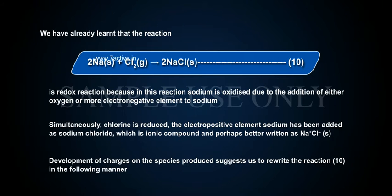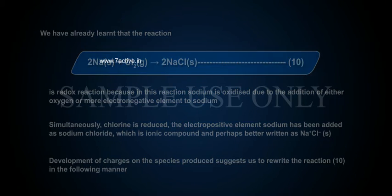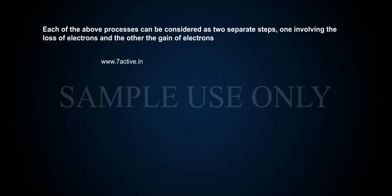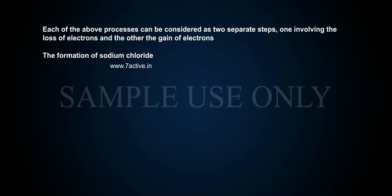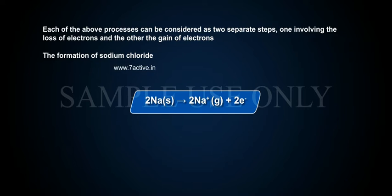The development of charges on the species produced suggests us to rewrite the reaction in the following manner. Each of the above processes can be considered as two separate steps — one involving the loss of electrons and the other the gain of electrons — in the formation of sodium chloride. 2Na(s) → 2Na⁺(g) + 2e⁻.